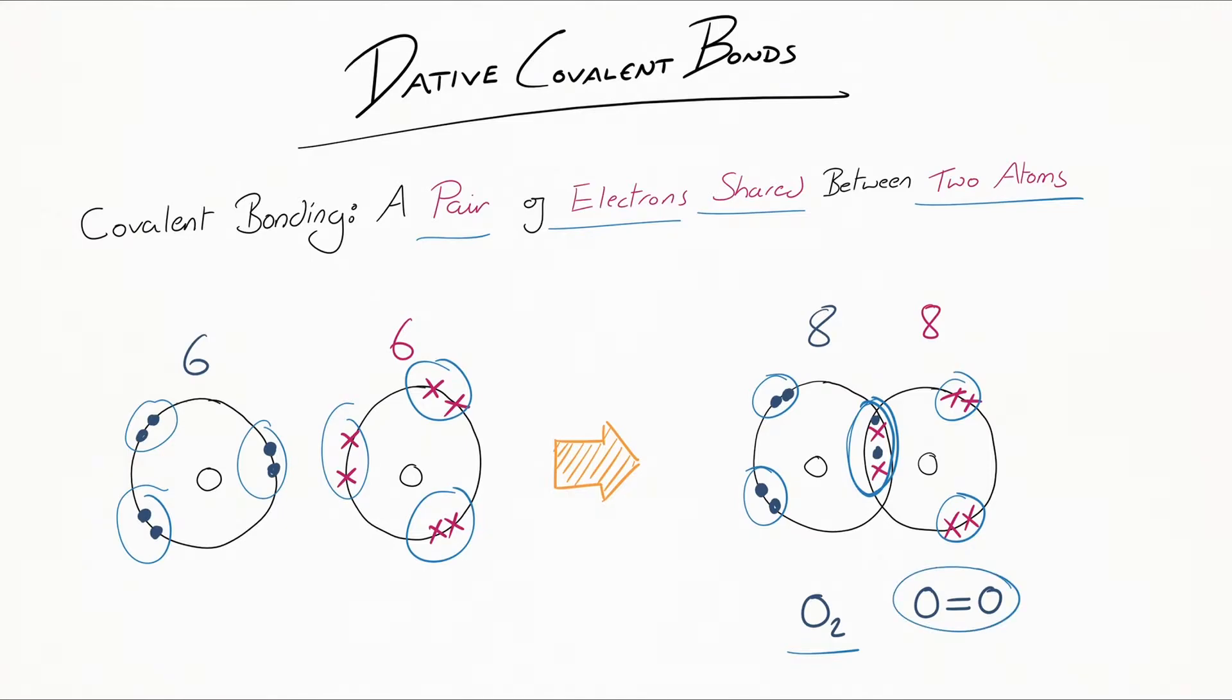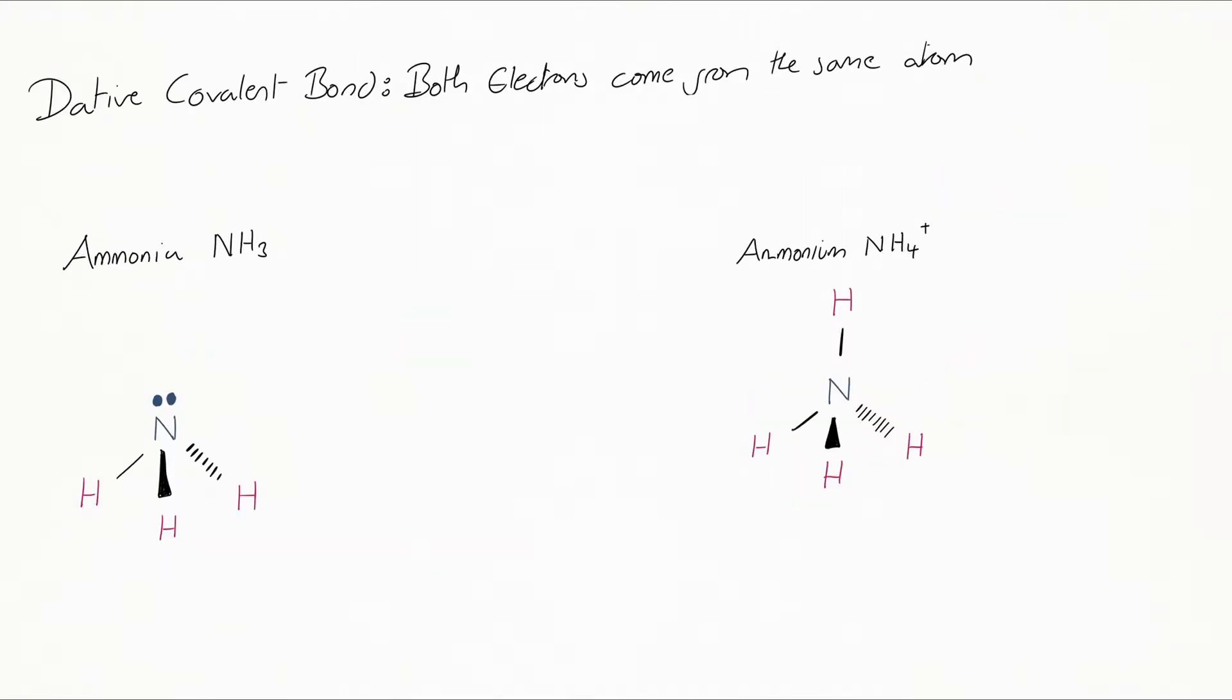If this is new to you, please go back to the previous video just to recap before moving further. So now that we know what a covalent bond is, just what is a dative covalent bond? A dative covalent bond is a type of covalent bond where both electrons come from the same atom.